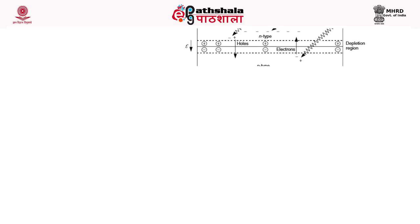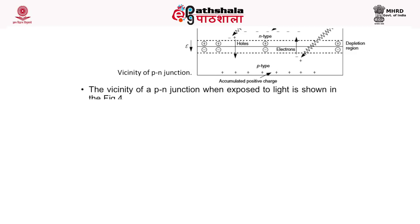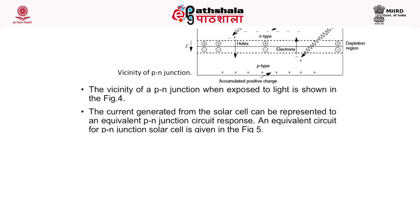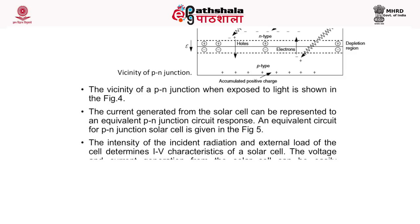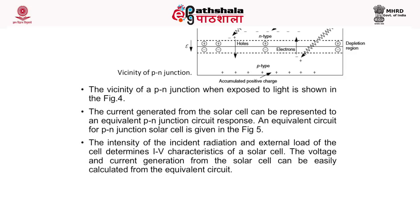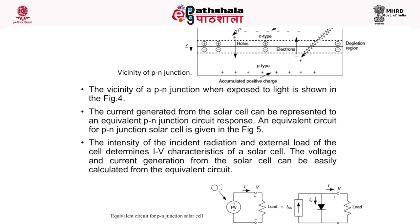This figure shows the vicinity of a p-n junction when exposed to light. The current generated from the solar cell can be represented by an equivalent p-n junction circuit. An equivalent circuit for a p-n junction solar cell is given in this figure, and the intensity of incident radiation and external load determines the IV characteristics — the current and voltage characteristics of a solar cell. The voltage and current generation can be easily calculated from this equivalent circuit.